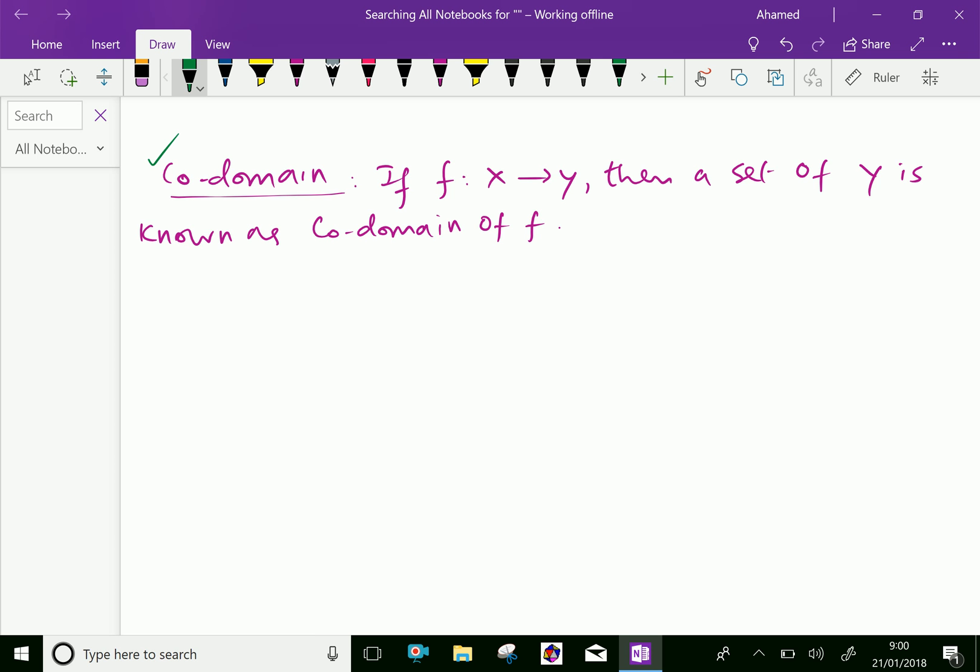That similar function previously we discussed: 1, 2, 3, this is a function x, input x, then m, n, p. Here 1 is related to m, 2 is related to n, 3 is related to p. Here, the co-domain equals m, n, p. Also, it is called range also.